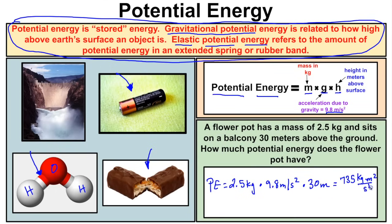The result is 735 kilograms·meters²/seconds², which converts to 735 joules of potential energy stored in that flower pot 30 meters above the ground. Any object above Earth's surface — teetering on a ledge or cliff — will have a certain amount of potential energy calculated this way.